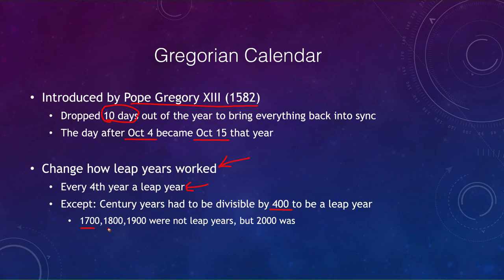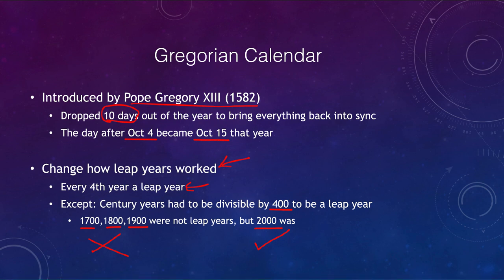The Gregorian calendar kept the rule that every fourth year is a leap year, but added that century years must also be divisible by 400 to be leap years. So 1700, 1800, and 1900 — divisible by four but not by 400 — were not leap years, while 2000 was. The year 2100 will not be a leap year. This averages things out and keeps the calendar in close alignment, taking many tens of thousands of years to drift significantly.